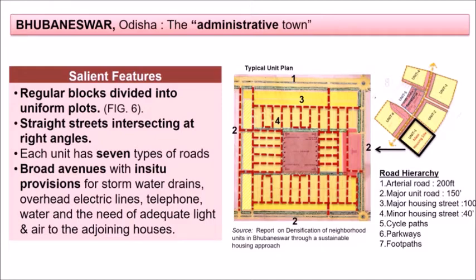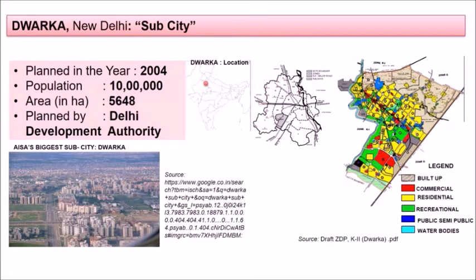Dwarka is in New Delhi and was planned as a sub-city in the year 2004 for a population of 10 lakhs, with an area of 5,648 hectares in the southwest part of Delhi. It was planned by the Delhi Development Authority with a team of eminent experts from various disciplines.